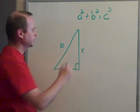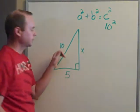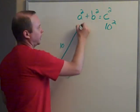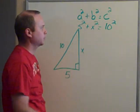So now what I'm going to do is fill in the information. I know that this is 10 squared. I know that's my C. A and B, it doesn't matter what order they're in. I'm going to pick A as 5. 5 squared plus X squared equals 10 squared.